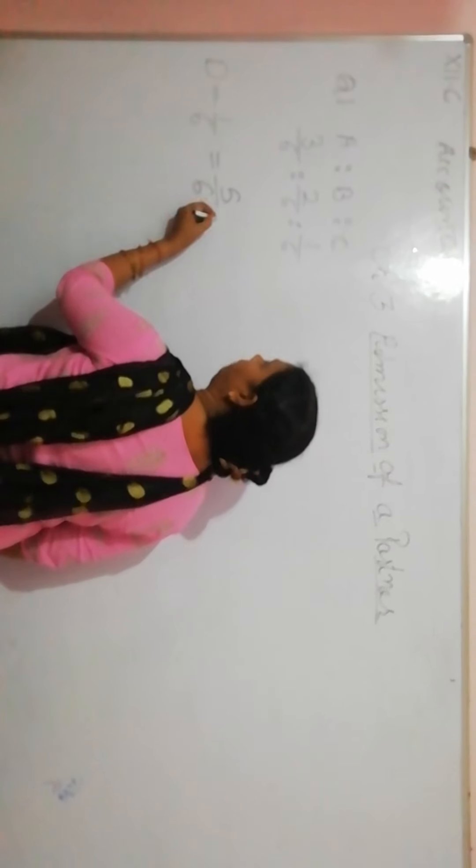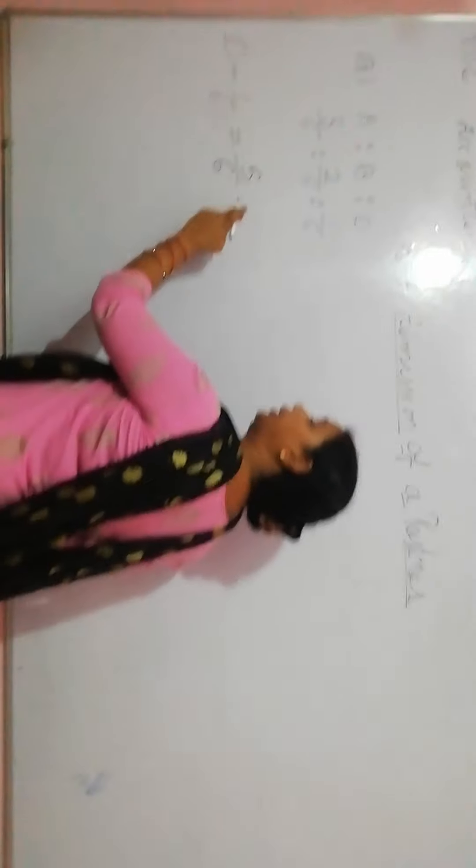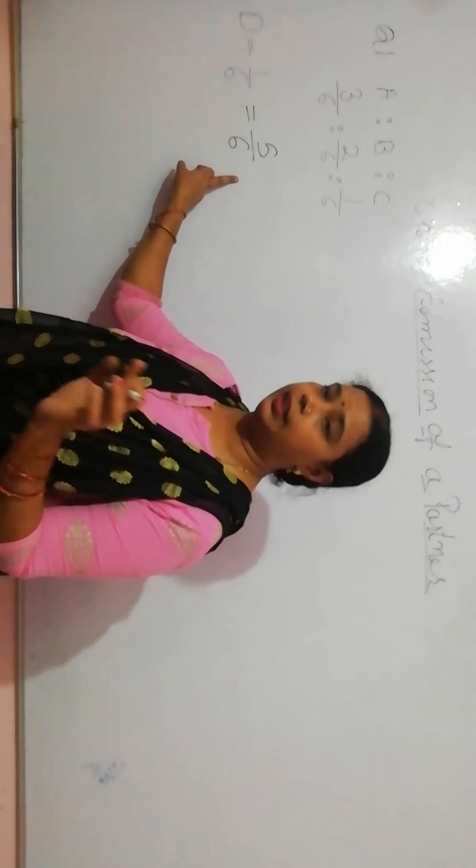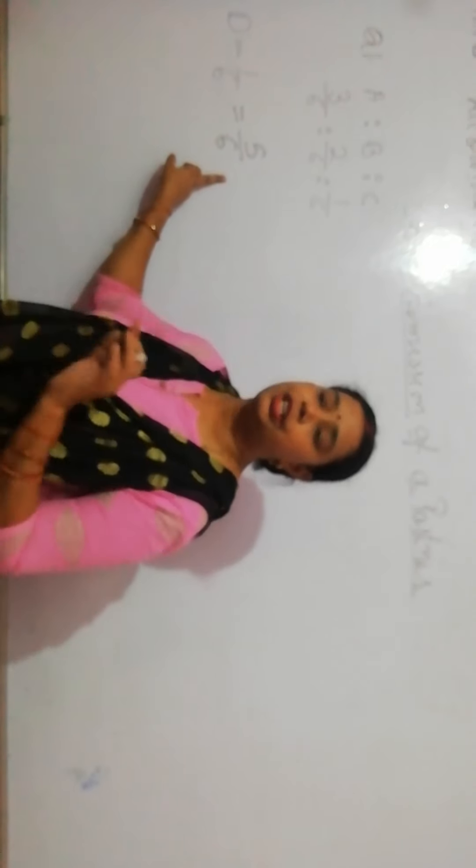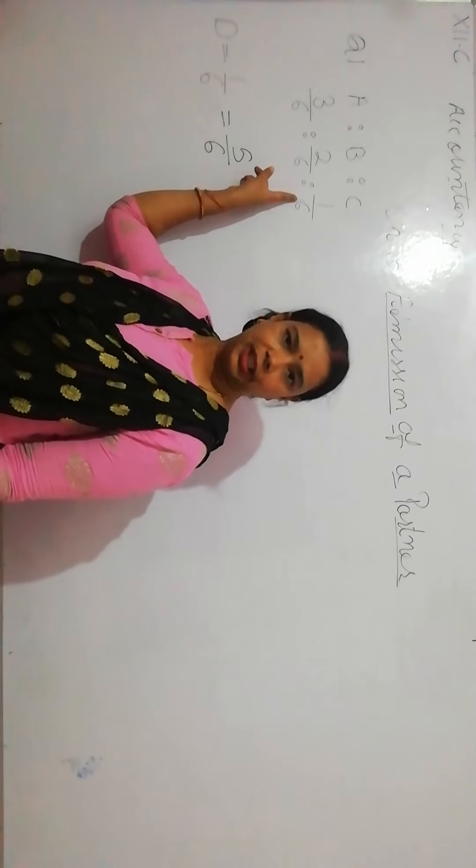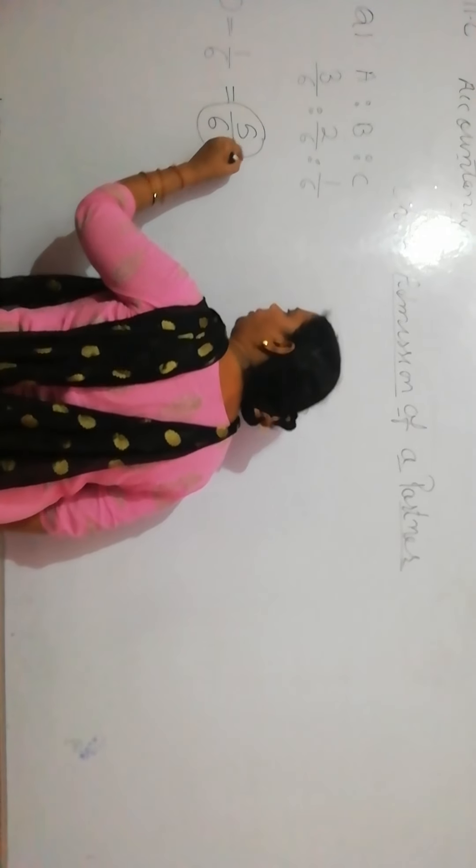So now this profit will distribute. Who will distribute it? A, B, C. Which ratio will distribute it? This ratio will be given in the question. Since we are starting, the ratio will not be given. So we will assume that it will be talked about in our own ratio. This is where 5 by 6 profit is adding.